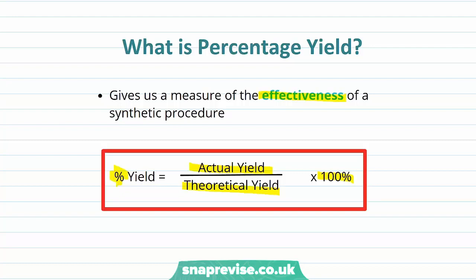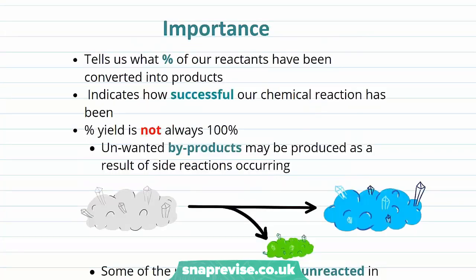So what's the importance of our percentage yield? Because it is incredibly important. Well, percentage yield tells us what percentage of our reactants have been converted into the products. It indicates how successful our chemical reaction has been. Now, percentage yield is not always 100%, and this is due to many reasons.